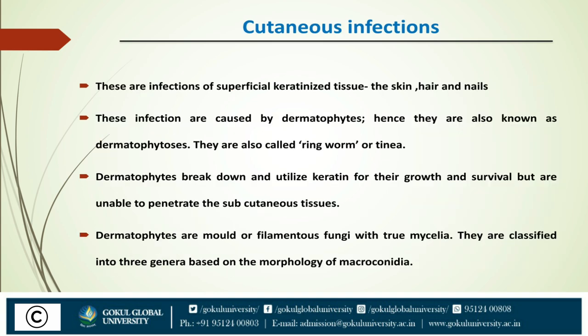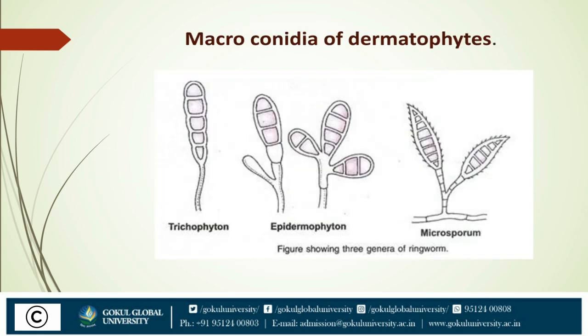The second type of superficial mycosis is cutaneous infection. These are infections of superficial keratinized tissue — the skin, hair, and nails. These infections are caused by dermatophytes, and hence they are also known as dermatophytosis. They are also called ringworm or tinea. Dermatophytes break down and utilize keratin for their growth and survival but are unable to penetrate subcutaneous tissue. Dermatophytes are mold or filamentous fungi with true mycelia. They are classified into three genera based on morphology of macroconidia: Trichophyton, Microsporum, and Epidermophyton.